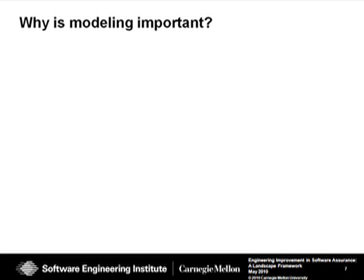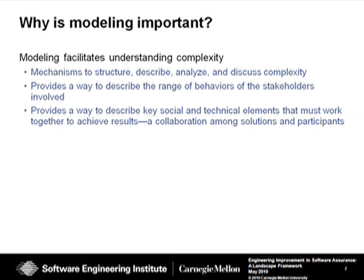In addressing this problem space, it's important to consider why modeling is useful. Complexity is something that is difficult to describe on a single sheet of paper with a few notations — it ends up with complex volumes of reports. Modeling provides a way to visualize the information and communicate it across a broad range of participants, while allowing content to be explored and assembled. It also provides a way to look beyond just technology, to explore how social elements and the collaboration of people and solutions must work together to achieve results.